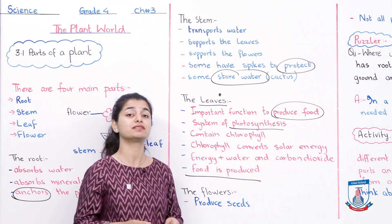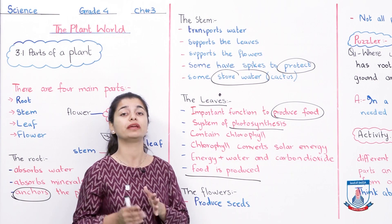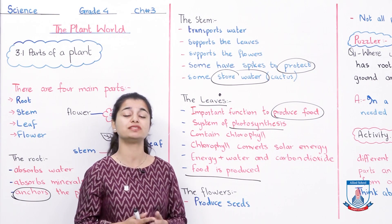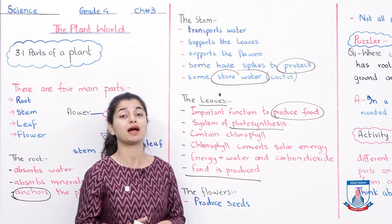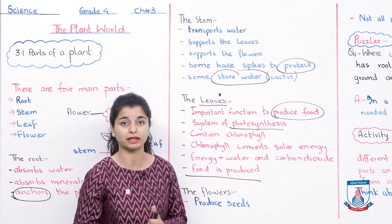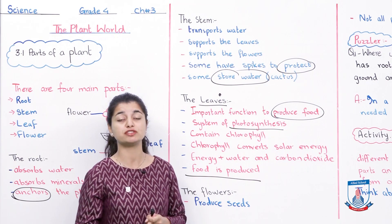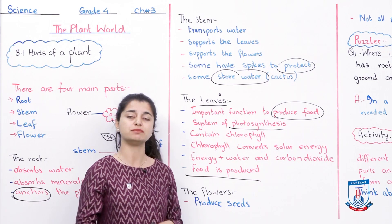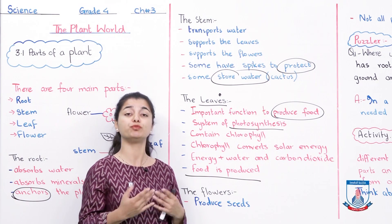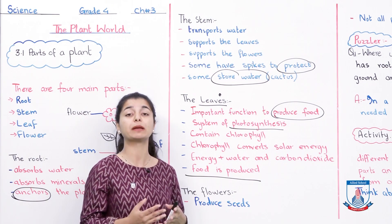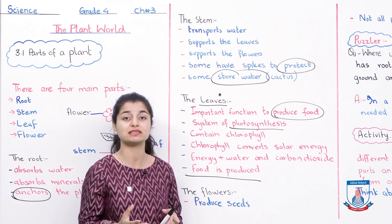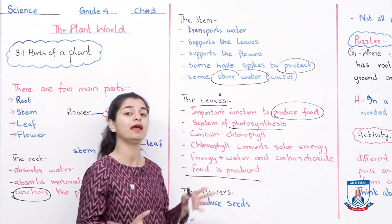So what we are learning is that leaves play an important role — they are the center of food production. Photosynthesis happens in the leaves using chlorophyll, solar energy, water, and carbon dioxide. That is how plants make food. From roots, they got water and minerals; from the stem, those are transported; but where do they get food? They get it from the leaves.